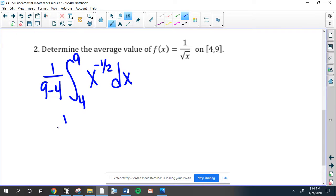So this would be 1 over 5 times the integral of x to the negative 1 half, add 1, negative 1 half plus 1 is 1 half, times the reciprocal of 1 half, which is 2. That works out nicely.